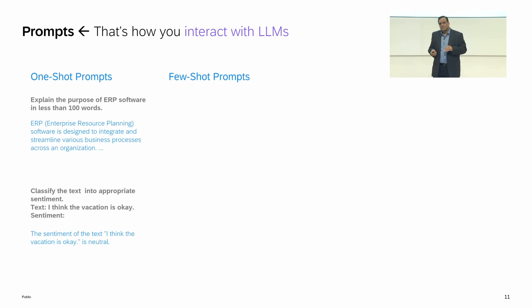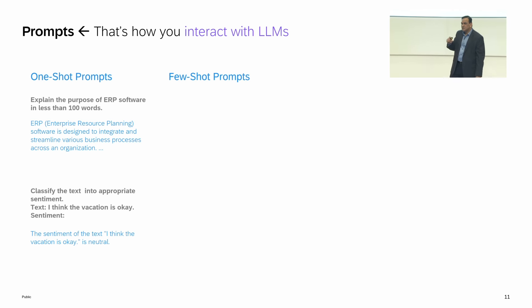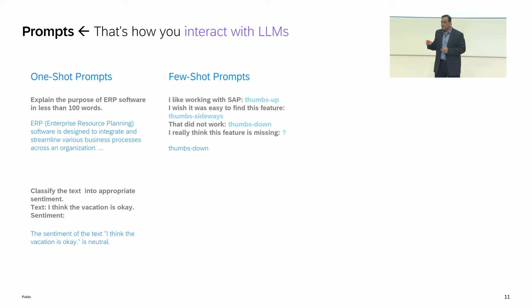Then comes the few-shot prompt. A few-shot prompt is a technique in which you teach the large language model. I'm using the word 'teach' carefully — I am not using the word 'training,' because training does not happen in LLMs. The LLM is already trained. So you are going to teach the LLM through your instructions, go through my inputs as examples, learn from it, and figure out what I'm trying to do. In this case I'm still doing sentiment analysis, except I want the LLM to not use standard positive/negative/neutral labels — I want it to use thumbs up, thumbs down, and thumbs sideways. And it has done that based on the few examples provided.